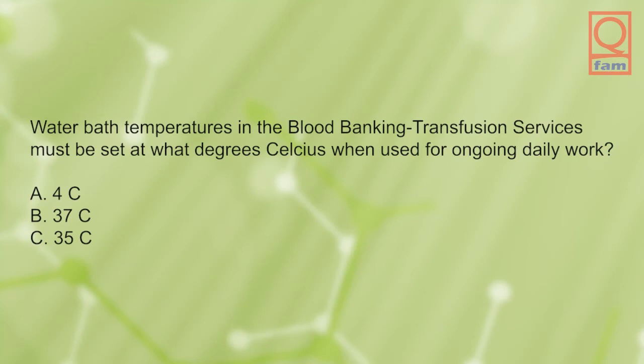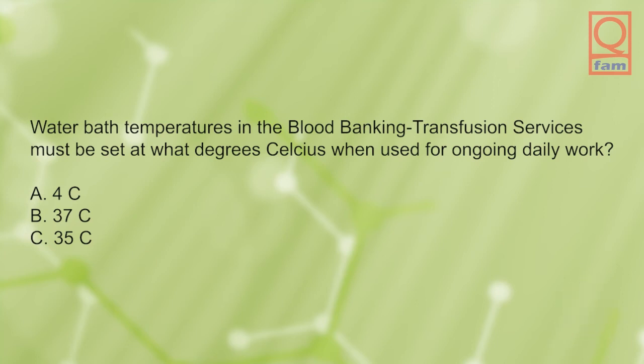Water bath temperatures in the blood banking transfusion services must be set at what degrees Celsius when used for ongoing daily work? A) 4 degrees Celsius, B) 37 degrees Celsius, C) 35 degrees Celsius. The answer is B, 37 degrees Celsius.